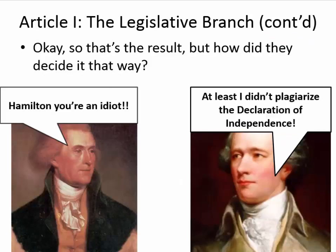That concludes Article 1, but the question is how did they decide it that way — what were the deliberations? Thomas Jefferson and Alexander Hamilton hated each other. Jefferson actually wasn't at the Constitutional Convention; he was in France trying to strike up trade agreements with the French. They hated each other because Jefferson leaned toward keeping the Articles of Confederation, while Hamilton thought the federal government should have more power. These are the two sides of the argument at the Convention: Anti-Federalists like Jefferson who wanted state power, and Federalists like Hamilton who wanted a stronger federal government.